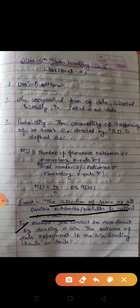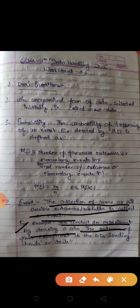For example, you conduct an experiment by tossing a coin. The outcome of this experiment is coin landing head or tail. So the possible outcomes to toss the coin is head or tail, head or tail.